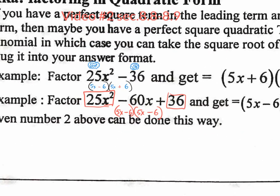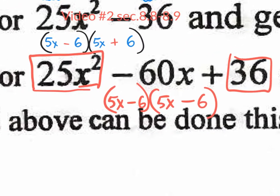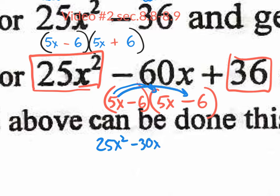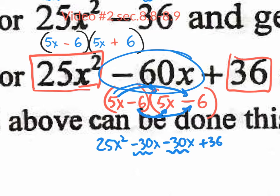Why is it negative and negative? Because the middle term is negative. It's always good to double check. Let's go through it: 5x times 5x is 25x squared. 5x times negative 6 is negative 30x. Negative 6 times positive 5 is another negative 30x. Negative 6 times negative 6 is positive 36. If I combine those two middle terms, I really do get that middle value — so I know I factored it right. It's very important that you check your answer, especially when you have trinomials.